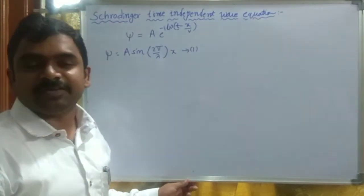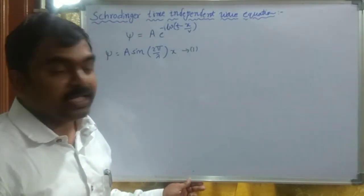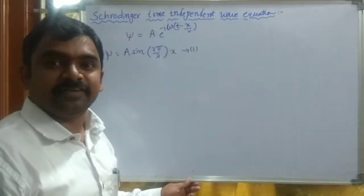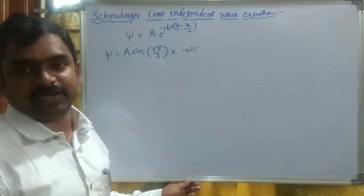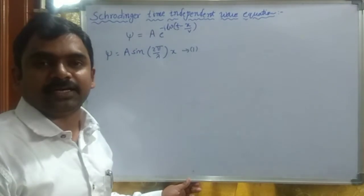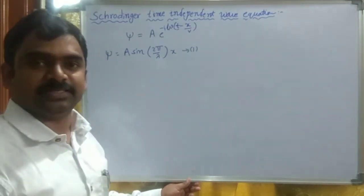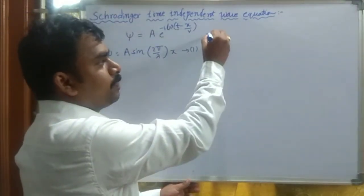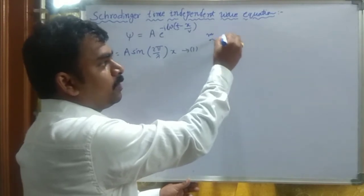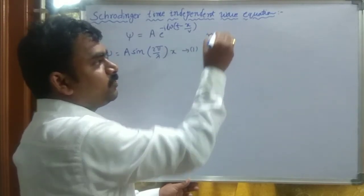The Schrödinger wave equation is a fundamental equation of quantum mechanics and is a differential form of equation. Now, let us consider a particle whose mass is m, associated with a wave, and whose velocity is v.